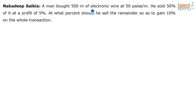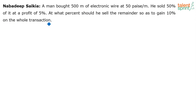A man bought 500 meters of electronic wire at 50 paisa per meter. He sold 50% of it at a profit of 5%. At what percent should he sell the remainder so as to gain 10% on the whole transaction?